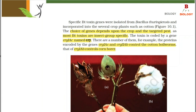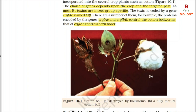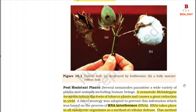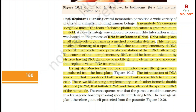Figure 10.1 shows a destroyed cotton boll and a fully mature cotton boll. Regarding pest-resistant plants: several nematodes parasite a wide variety of plants and animals including human beings. A nematode, Meloidogyne incognita, infects the roots of tobacco plants and causes a great reduction in yield.